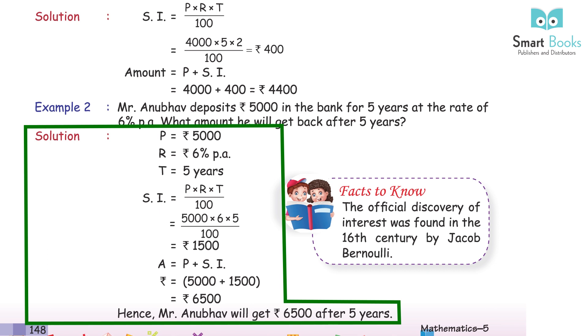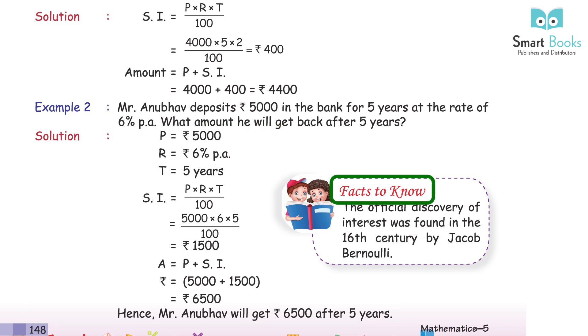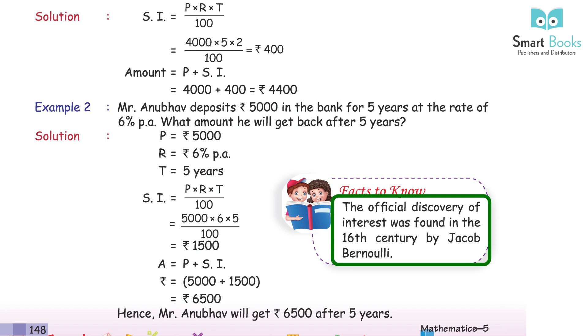Hence, Mr. Anubhav will get Rs 6,500 after 5 years. Facts to know: The official discovery of interest was found in the 16th century by Jacob Bernoulli.